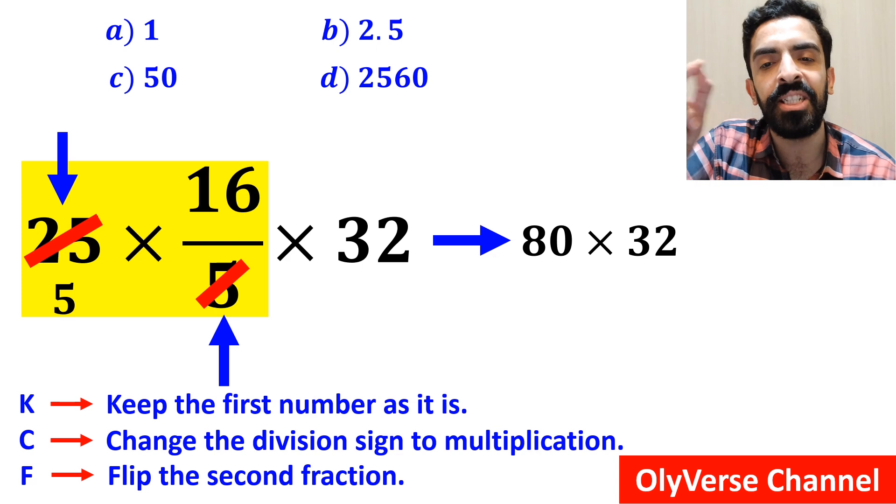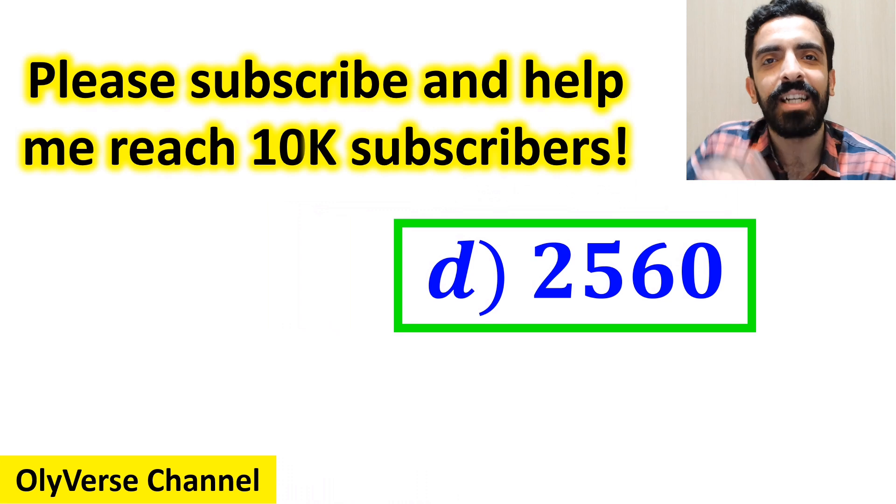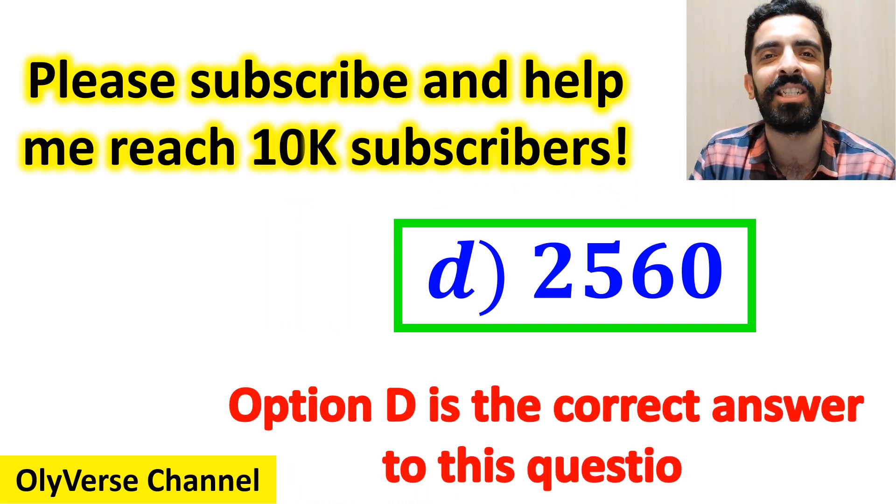Multiplied by 32, which finally gives us the answer 2560. That's great. Option D is the correct answer to this question.